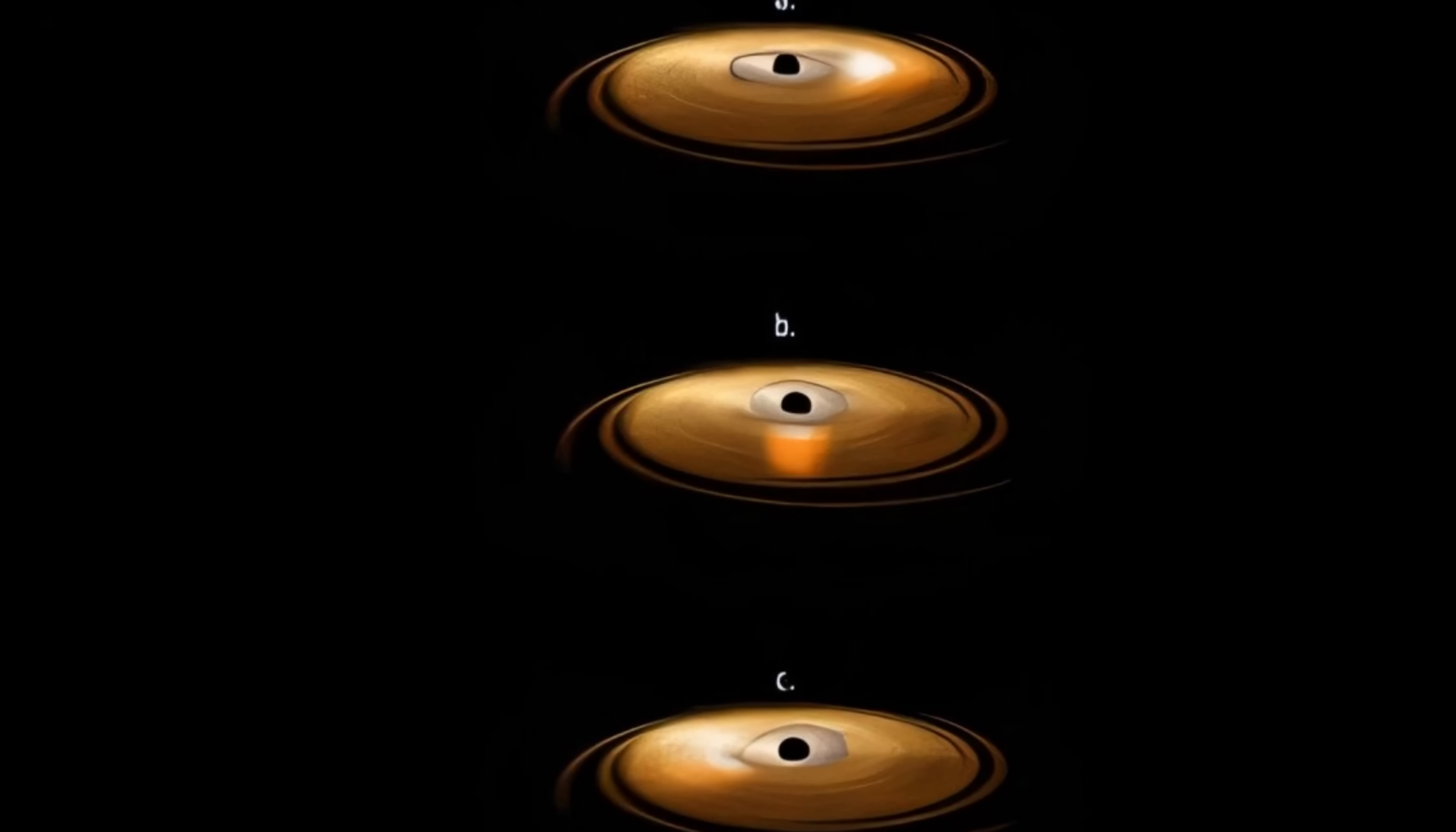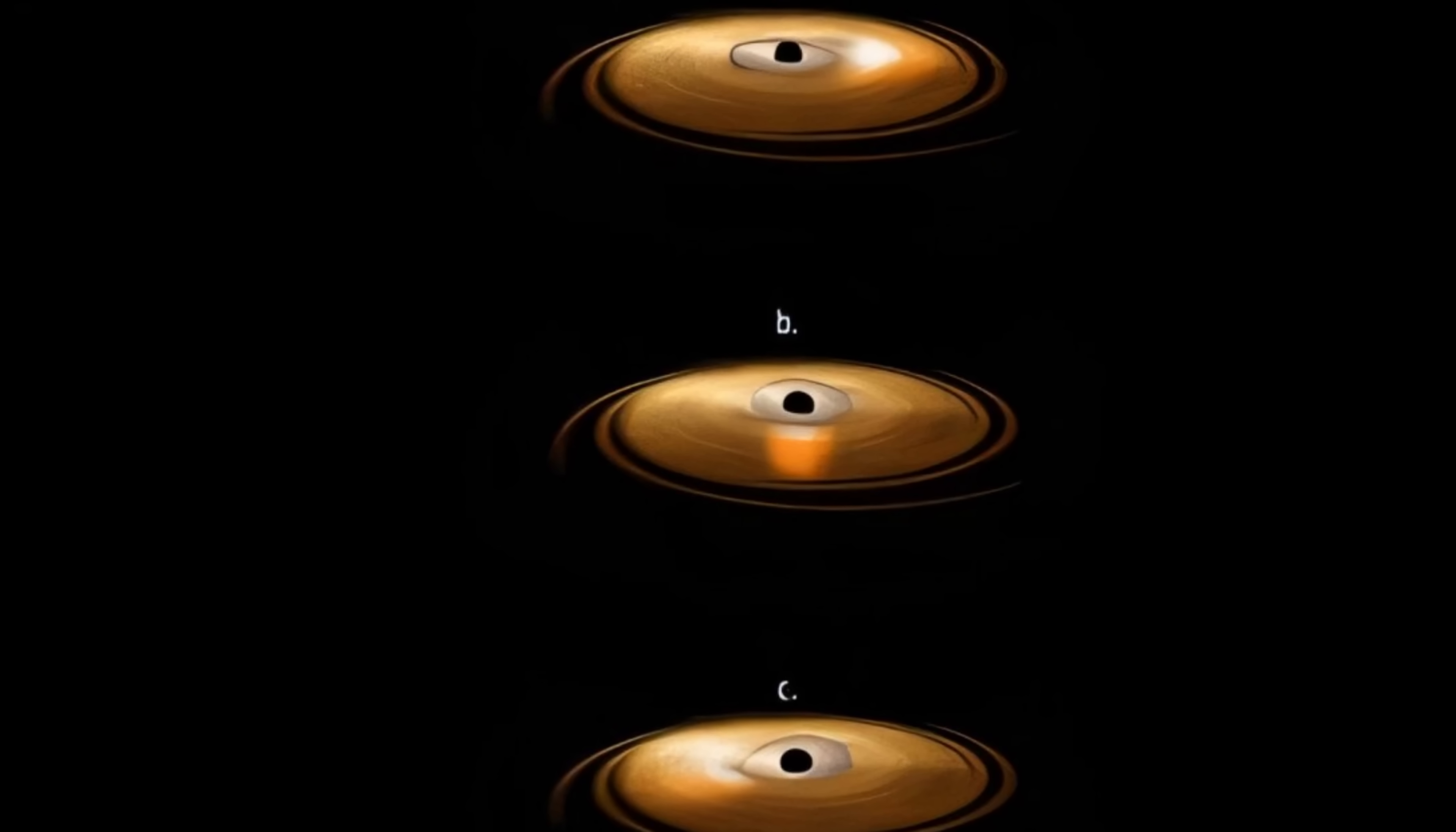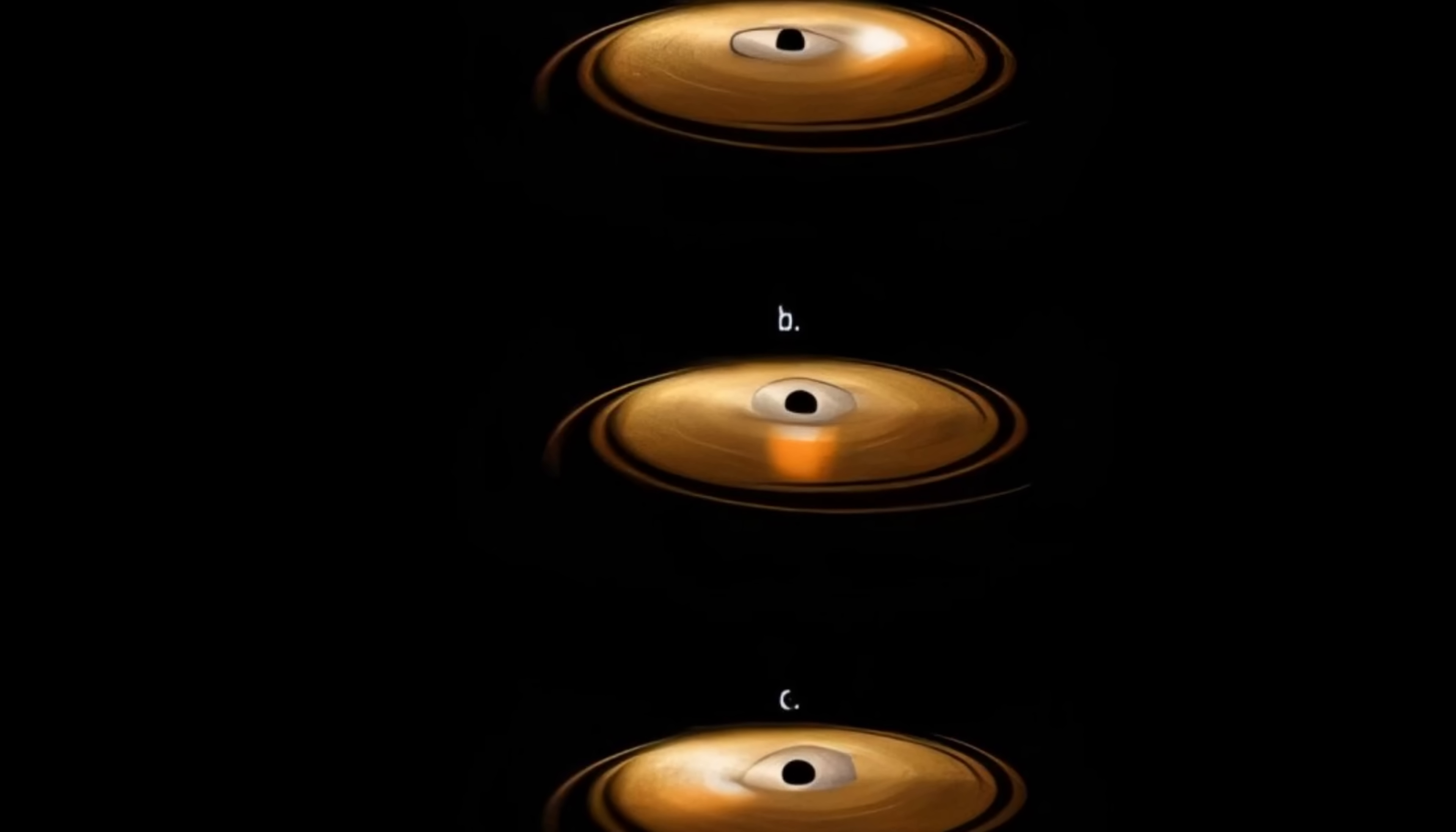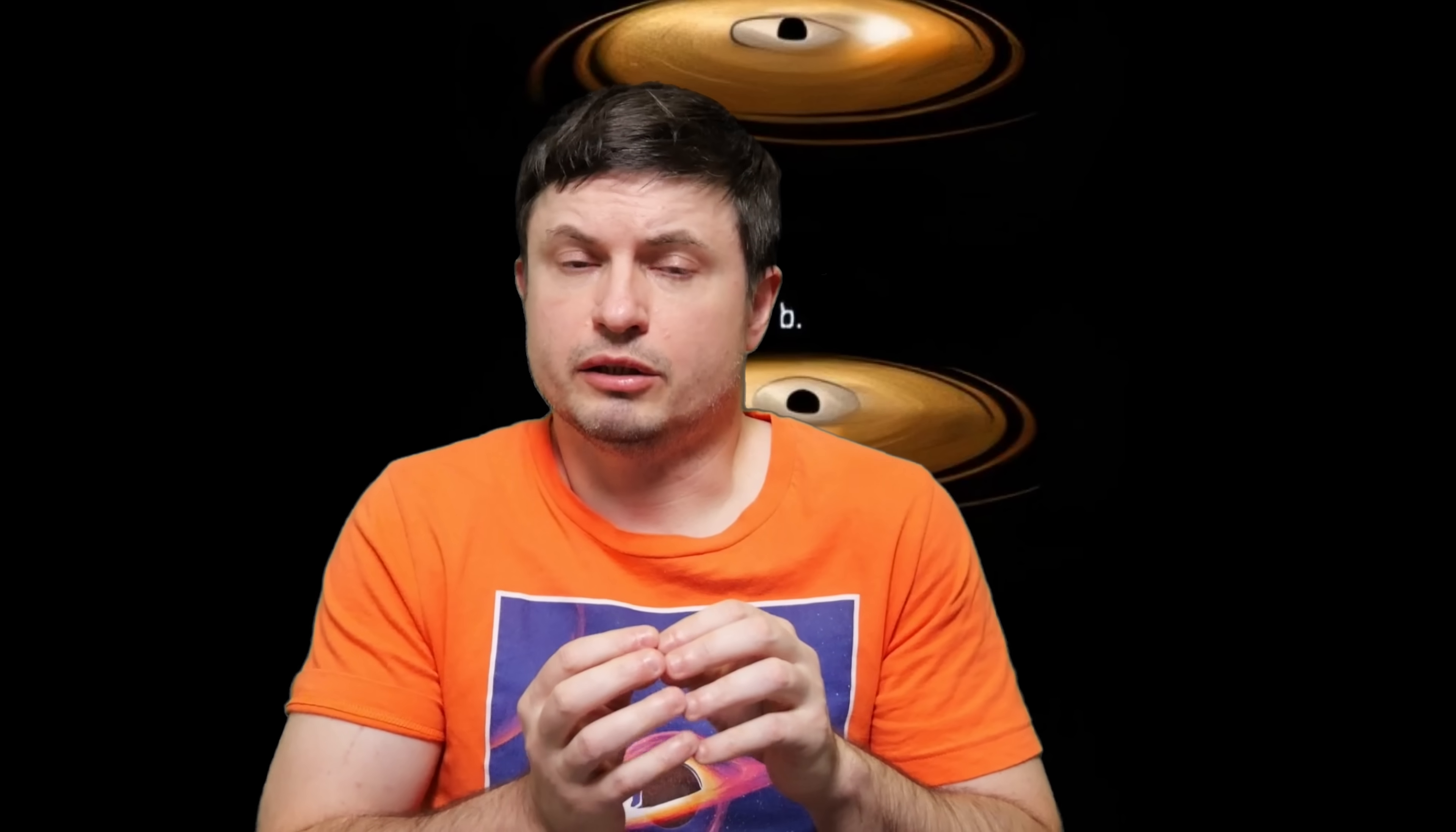And so here this distant black hole was seen twisting the fabric of space-time around itself as it spins. And it only became visible because of an unfortunate star that approached a little bit too close and became destroyed.